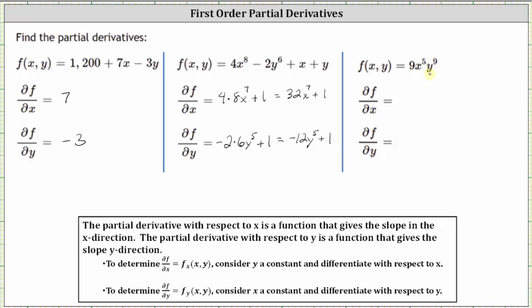For the last example, we have f(x, y) = 9x⁵y⁹. To find the partial of f with respect to x, we differentiate with respect to x, treating y as a constant. The derivative of 9x⁵y⁹ with respect to x is nine times 5x⁴, and we still have times y⁹ because we are treating y as a constant. The partial of f with respect to x is 45x⁴y⁹.